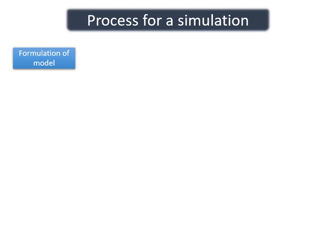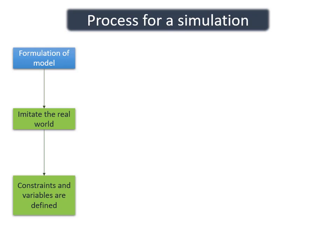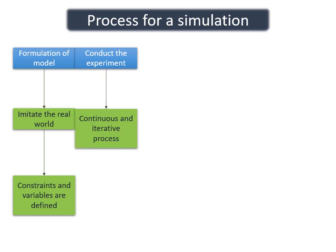The general process followed while conducting a simulation mainly consists of five steps. We will discuss all steps and activities done under these steps. The first step is to formulate a model which is an imitation of the real world. For this purpose, the constraints and variables are defined and taken from the real world scenario. In the second step, an experiment on the model is conducted. It is a continuous and iterative process which is done repeatedly until the expected or preferred outputs are generated.